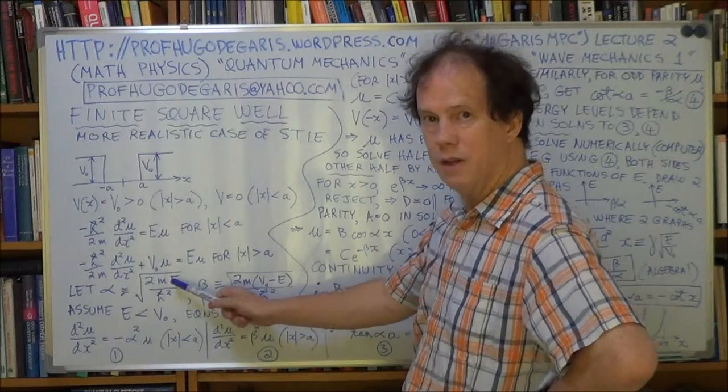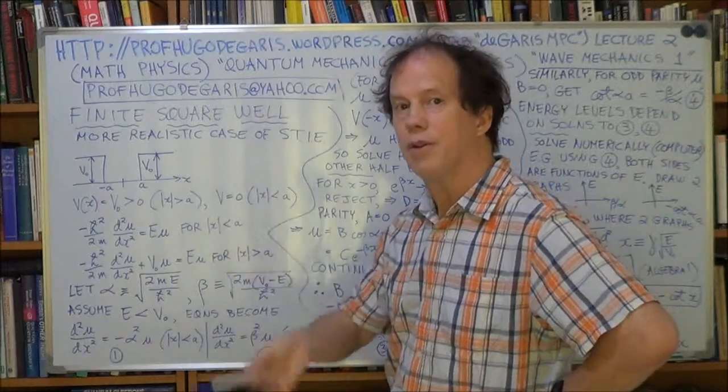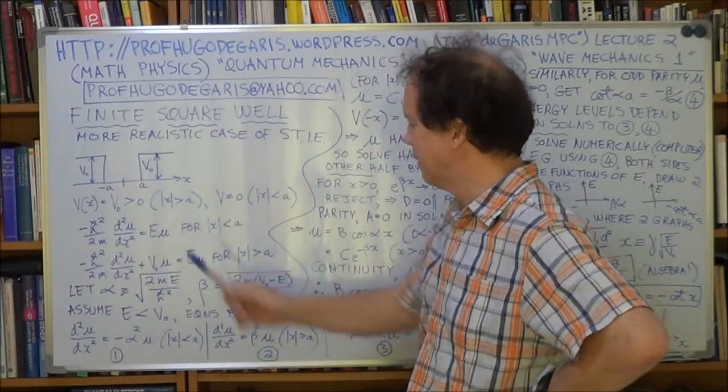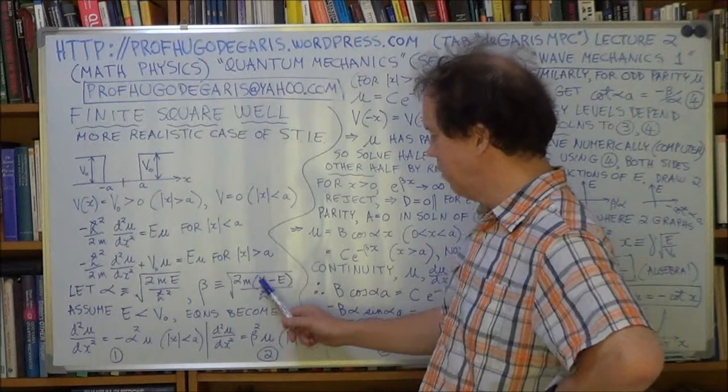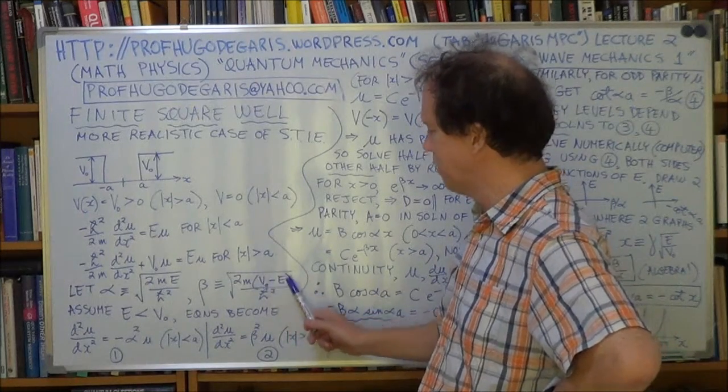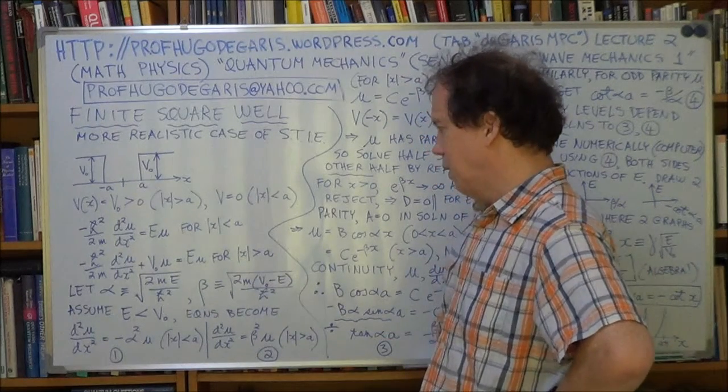Define these two variables alpha to be the square root of two m E over h bar squared, and E is what we're trying to find. Define beta to be something similar except you've got a term here V0 minus E, and the rest is much the same.